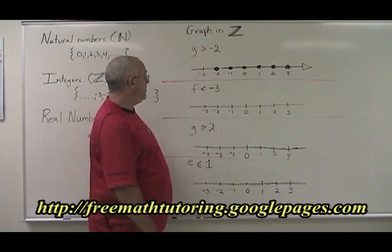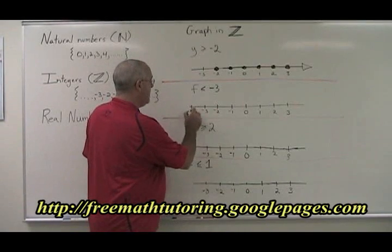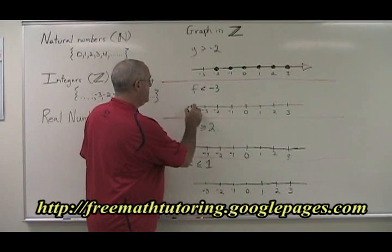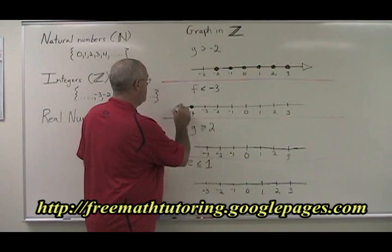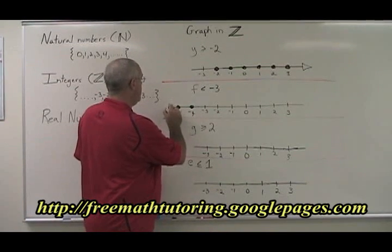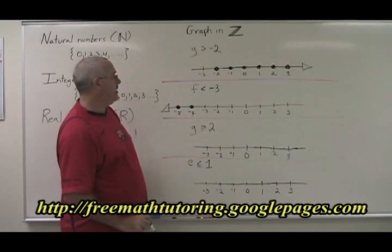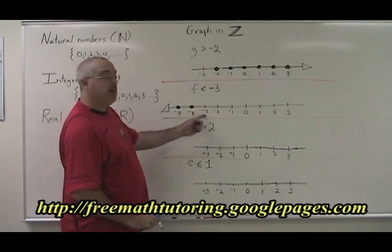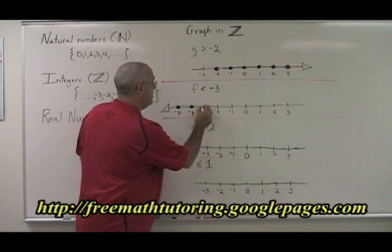F is less than or equal to negative 3. Negative 4 is less than or equal to negative 3, and so is negative 5, and it will go on forever in the negative direction. Negative 3 is equal to negative 3, so it's part of the answer too.